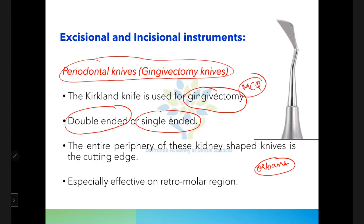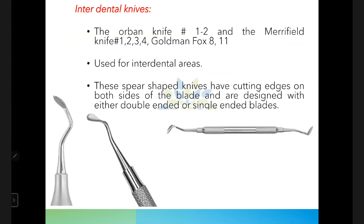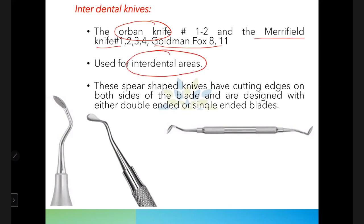These knives may be available in single-ended or double-ended form. The Kirkland knife is kidney-shaped — its entire periphery has a cutting edge, and it is especially effective on the retromolar region. The Kirkland knife is used on the facial surface for gingivectomy.